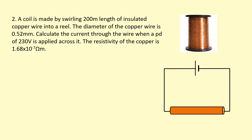A coil is made by winding 200 meters of insulated copper wire into a reel. The diameter of the copper wire is 0.52 millimeters. Calculate the current through the wire when a potential difference of 230 volts is applied. The resistivity of copper is 1.68 × 10⁻⁷ Ω·m. We have the length, diameter, voltage, and resistivity — we need to find the current.